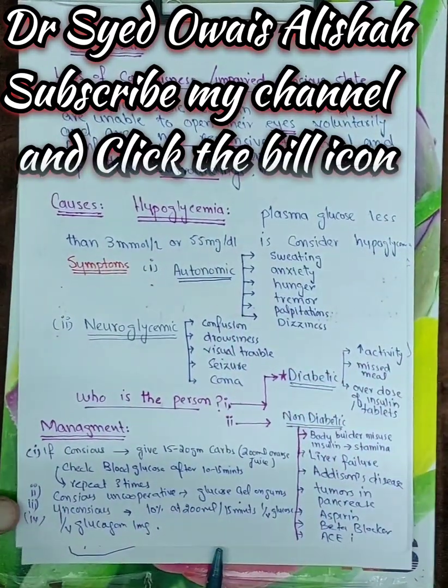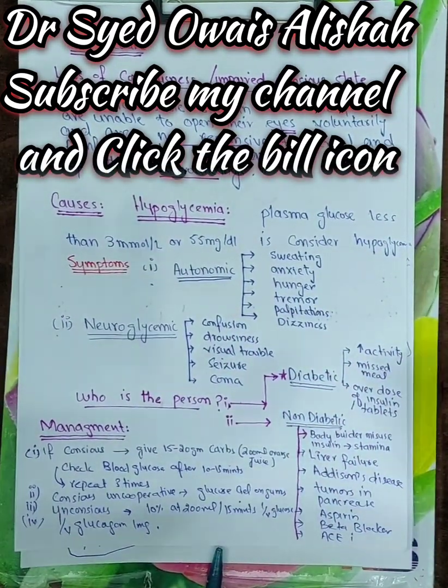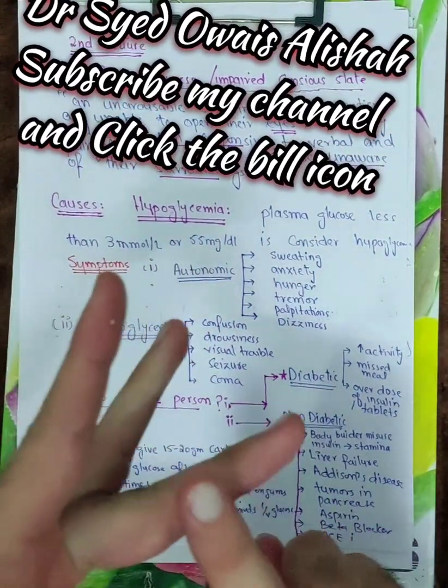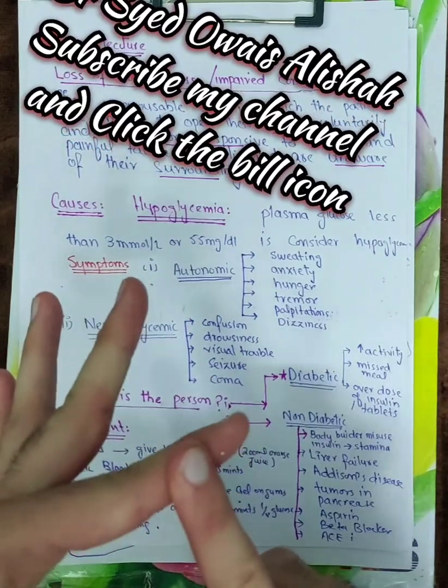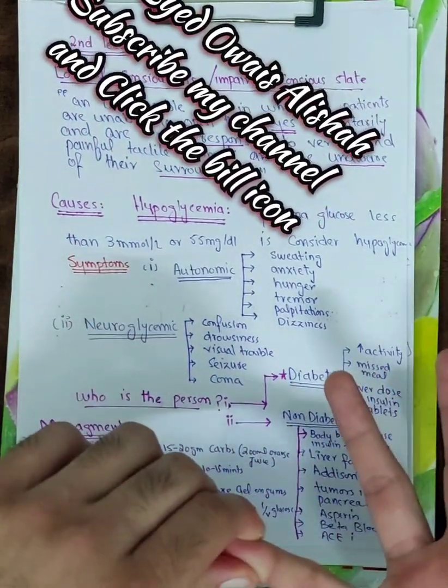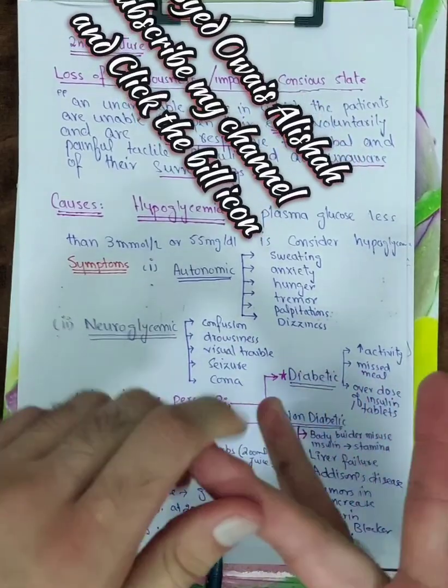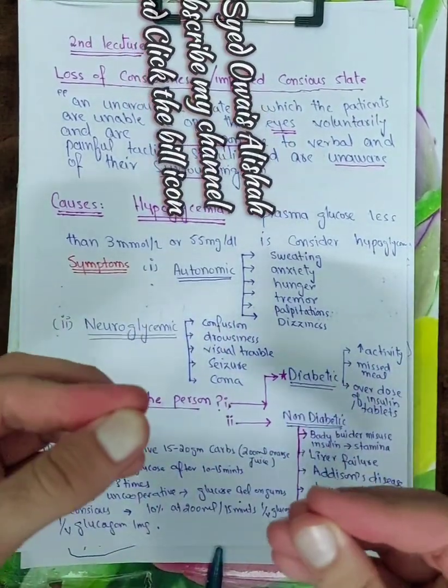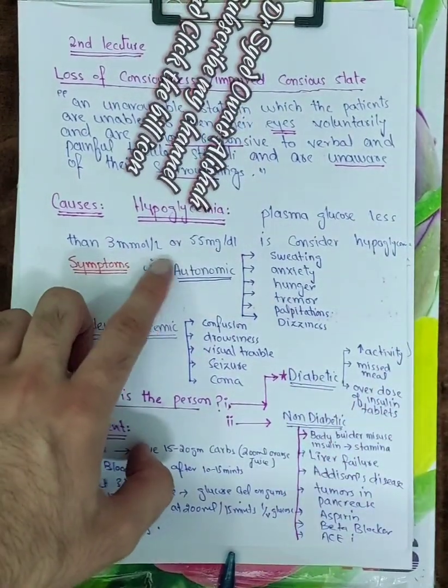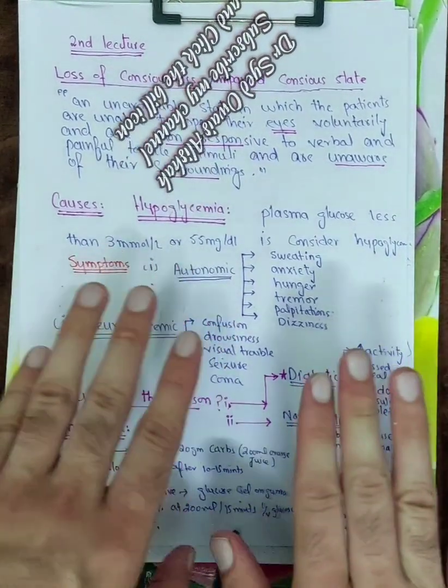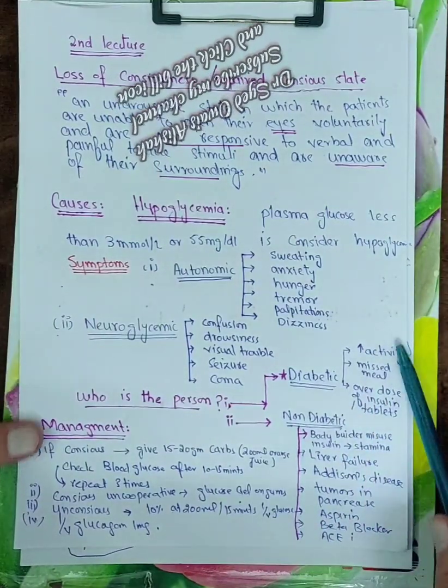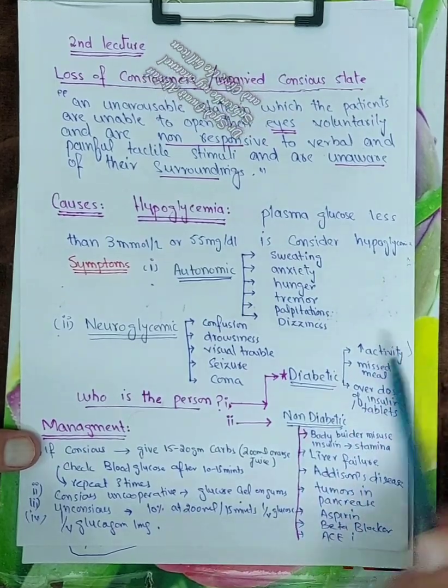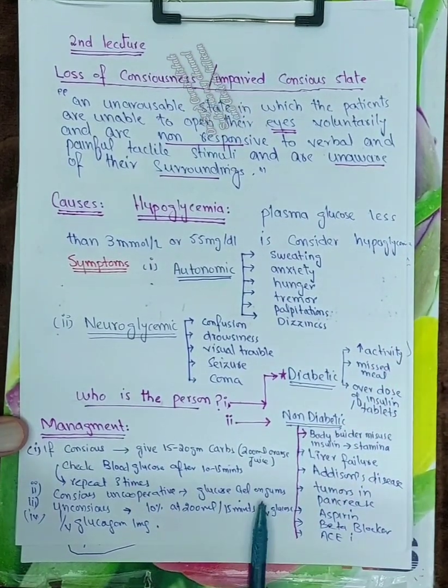So this was all about hypoglycemia. The patient will come with sweating, anxiety, hunger, tremor, palpitation, dizziness or in the confusion state, drowsiness, visual trouble, seizure, coma. Do a simple test - blood glucose level - check if the level is less than that, so it is hypoglycemia. And if you want to know if he is diabetic or non-diabetic, I mentioned it. And the management steps are these.